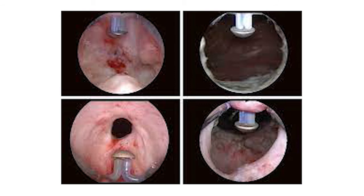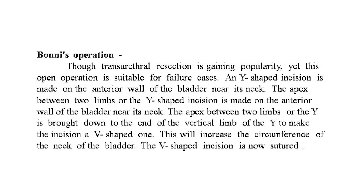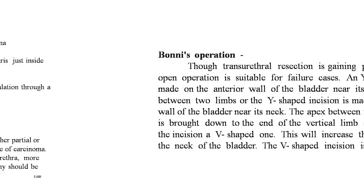In the second picture, by the urethrotome, it is widened and cut by electrocautery to widen the urethral opening. The open Y-V plasty operation is suitable for failure cases: a Y-shaped incision is made on the anterior wall of the bladder near its neck. The apex between the two limbs of the Y is brought down to the end of the vertical limb to make the incision V-shaped, increasing the circumference of the bladder neck, and the V-shaped incision is then sutured.